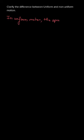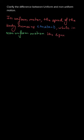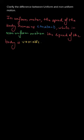Let's clarify the difference between uniform and non-uniform motion. In uniform motion, the body covers equal distance in equal intervals of time, while in non-uniform motion this is not the case. The first difference is that in uniform motion the speed is constant, because it is covering equal distance in equal intervals of time.